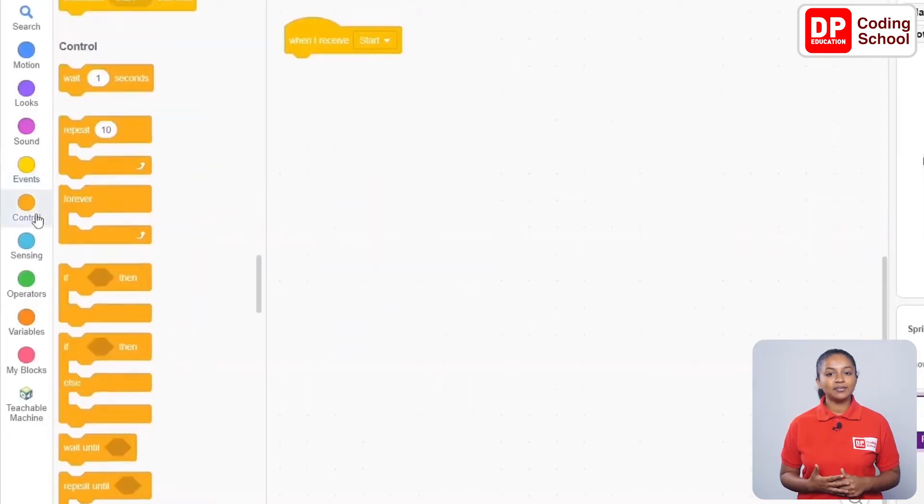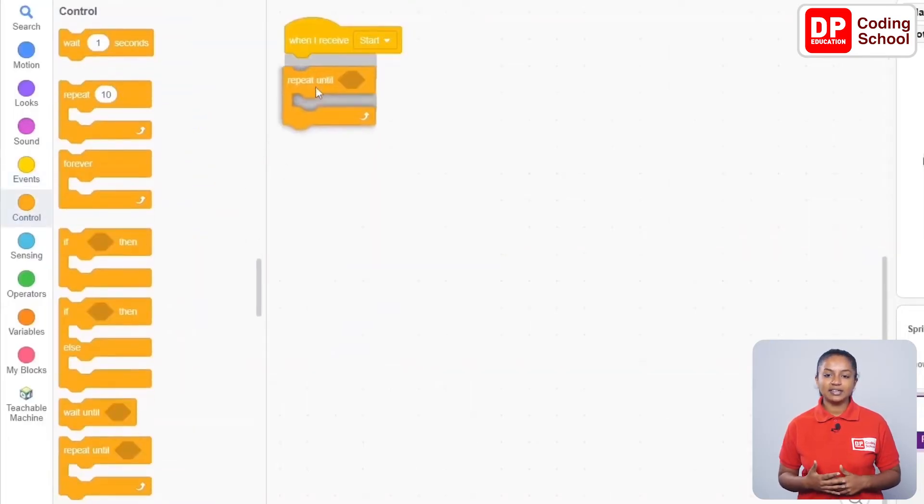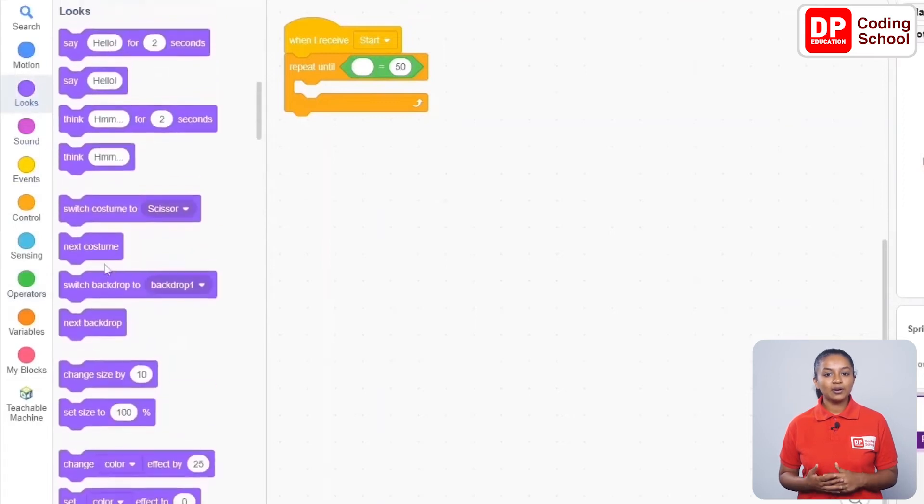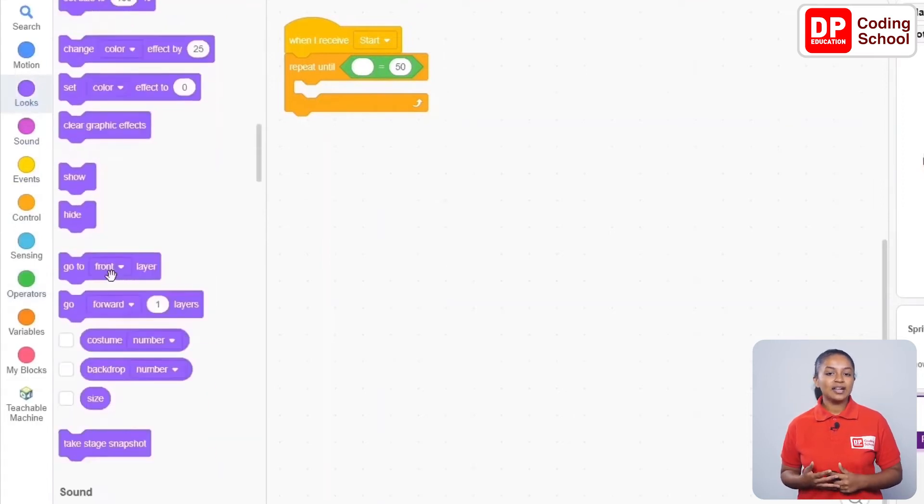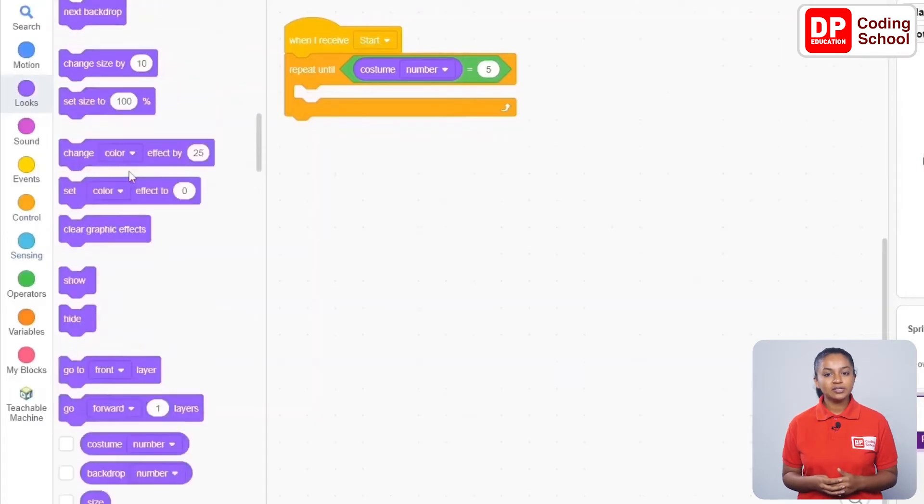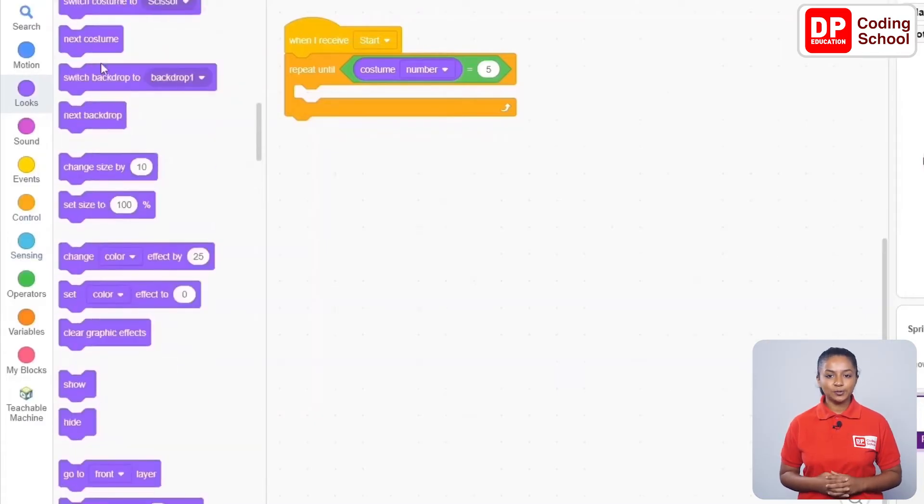Let's click control and connect a repeat until code block here. For the condition, a code block with the equal sign under operators is connected. A costume number code block under looks is connected to the left side of the equal sign. Let's type the number 5 on the right side. Now drag a next costume code block under looks into this repeat until code block.